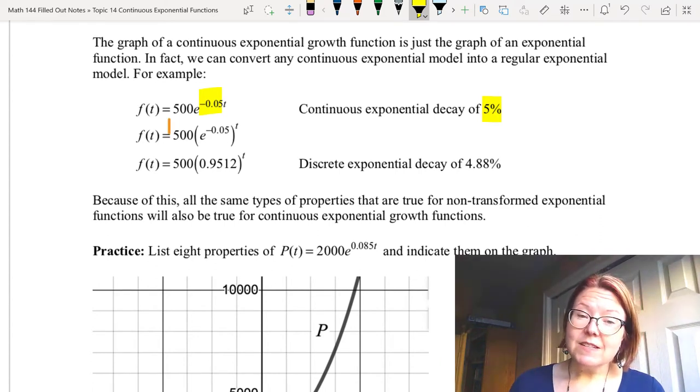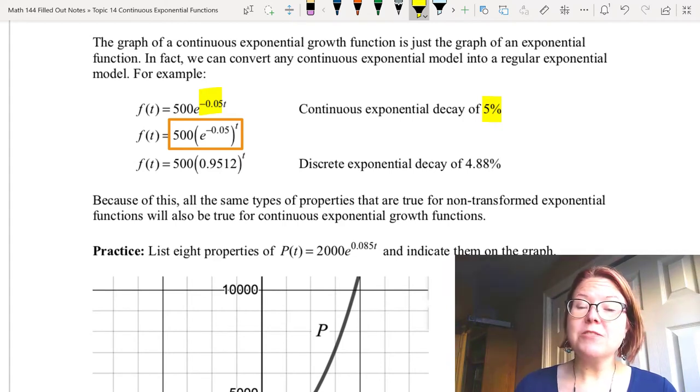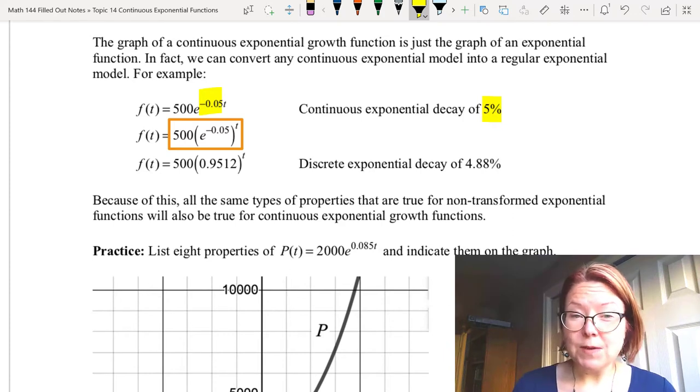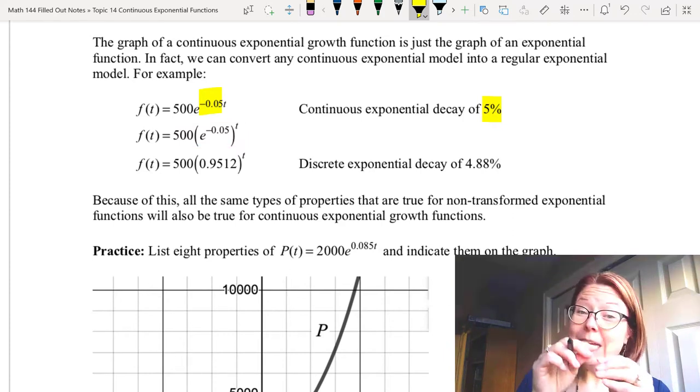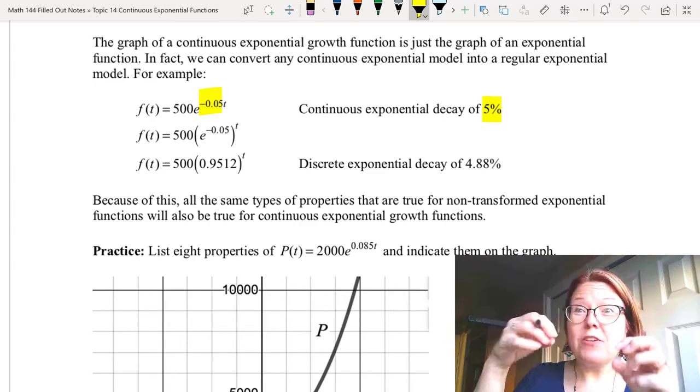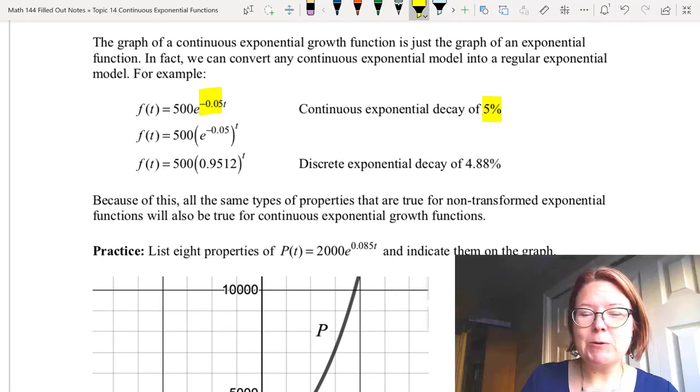Now we could rewrite this so that it reads 500 left parentheses e to the negative 0.05 right parentheses and then that part in parentheses is raised to the t power. So I'm just separating the negative 0.05 from the t with our exponent to an exponent rule. We multiply exponents when we have an exponent to an exponent.